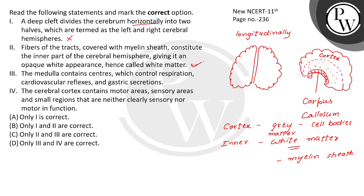So that is correct regarding white matter. Now the next statement: the medulla contains centers which control respiration, cardiovascular reflexes, and gastric secretions. This statement is also correct. You know the medulla oblongata — let's discuss where it belongs. It is not in the midbrain.